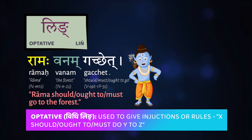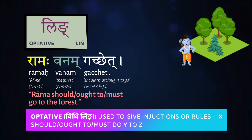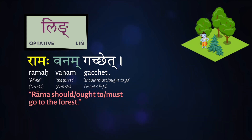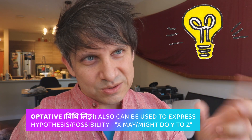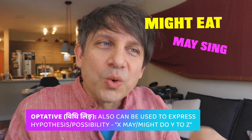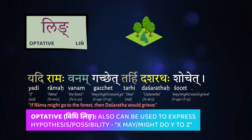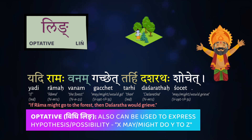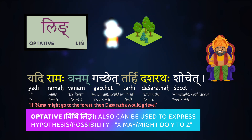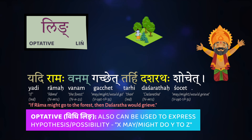For example, a sentence meaning 'Rama ought to go to the forest,' 'Rama should go to the forest,' or 'Rama must go to the forest.' There's a second way that the ling gets used, and that's as a hypothetical condition — so this has the meaning of might, or may, or would. This is often found in if-then situations: 'If Rama might go to the forest, then Dasharatha would grieve.' Both are hypothetical situations, and so they both get placed in the optative tense, the vidhiling.